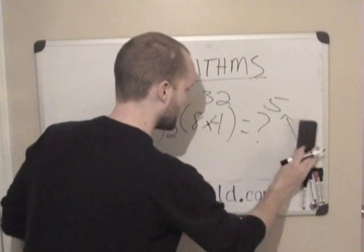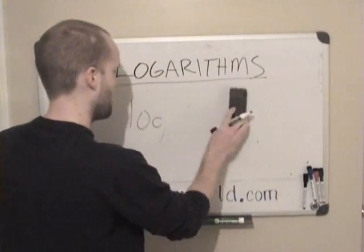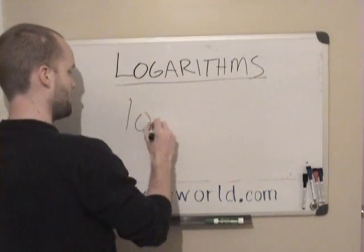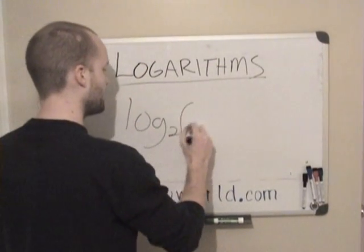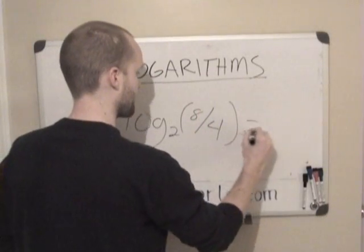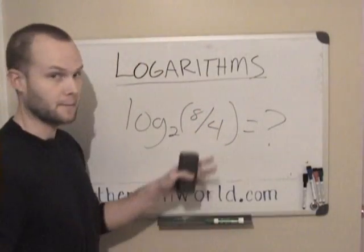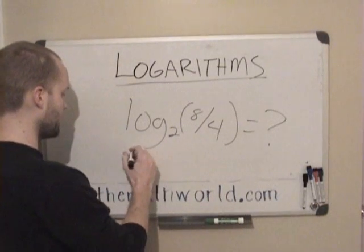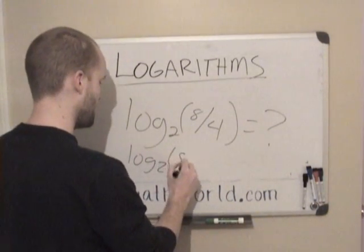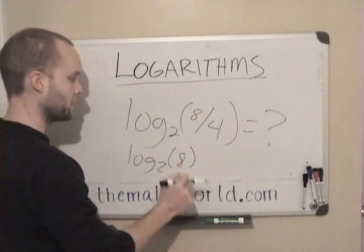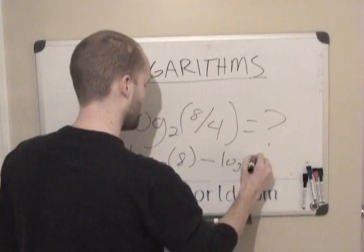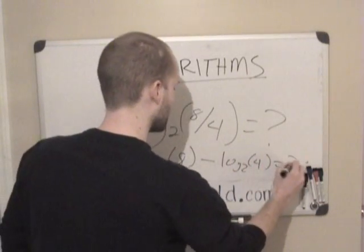In the same way that they multiply, on a simple term here, if you see 8 divided by 4, and obviously we know that 8 divided by 4 is 2, but for simplicity's sake, we can also write this, log base 2, 8, minus log 2, 4 equals.